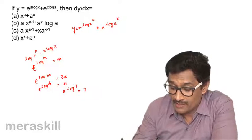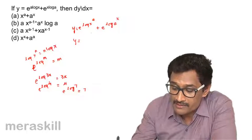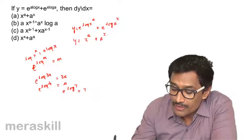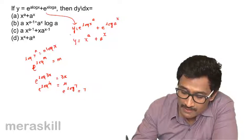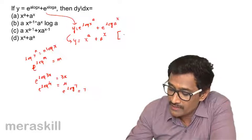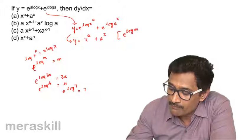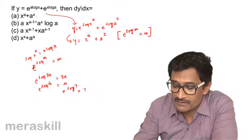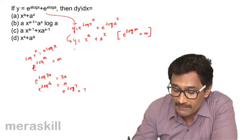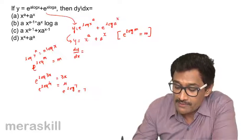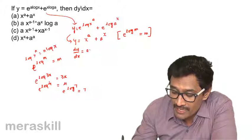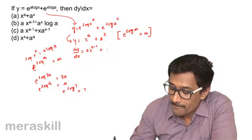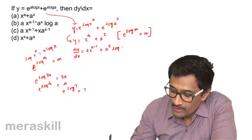So y = e^(log x^a) simplifies to x^a + a^x. The function has been simplified. Now we find dy/dx: the derivative of x^a (a constant) gives ax^(a-1), and the derivative of a^x gives a^x × log a.